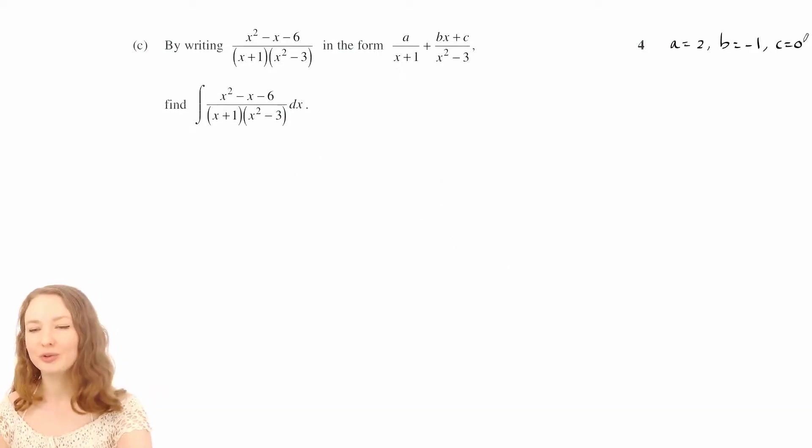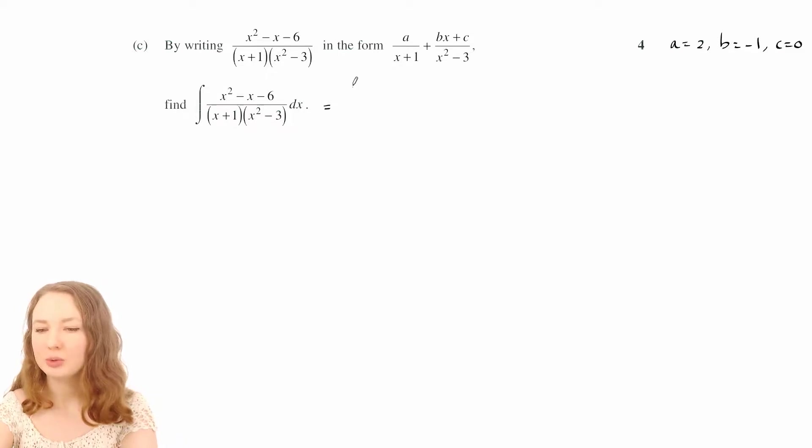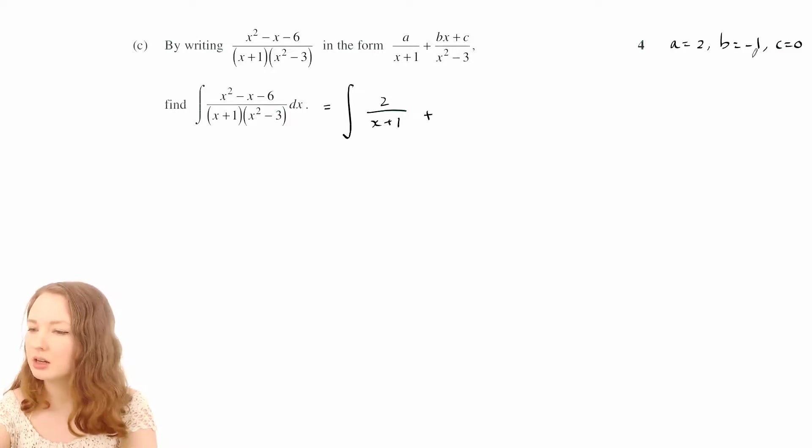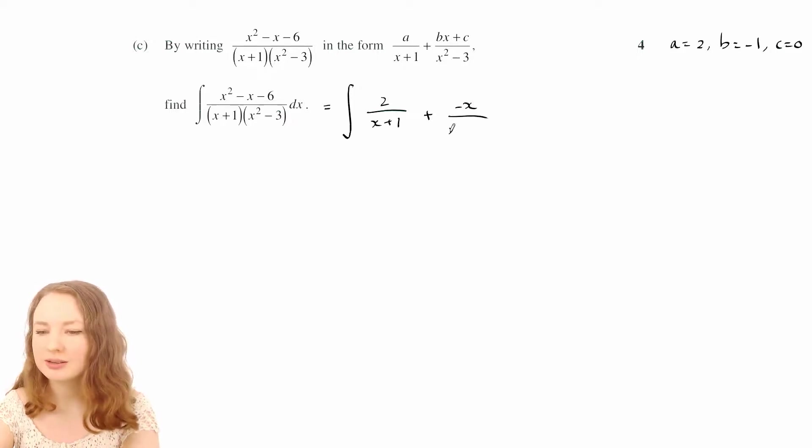So now that we've got those values, we can do this integral. So we just want to replace this with this expression with the values that we just found. So we've got 2 over x plus 1 plus b is negative 1, so we've got negative x. And then c is 0, so that just disappears.